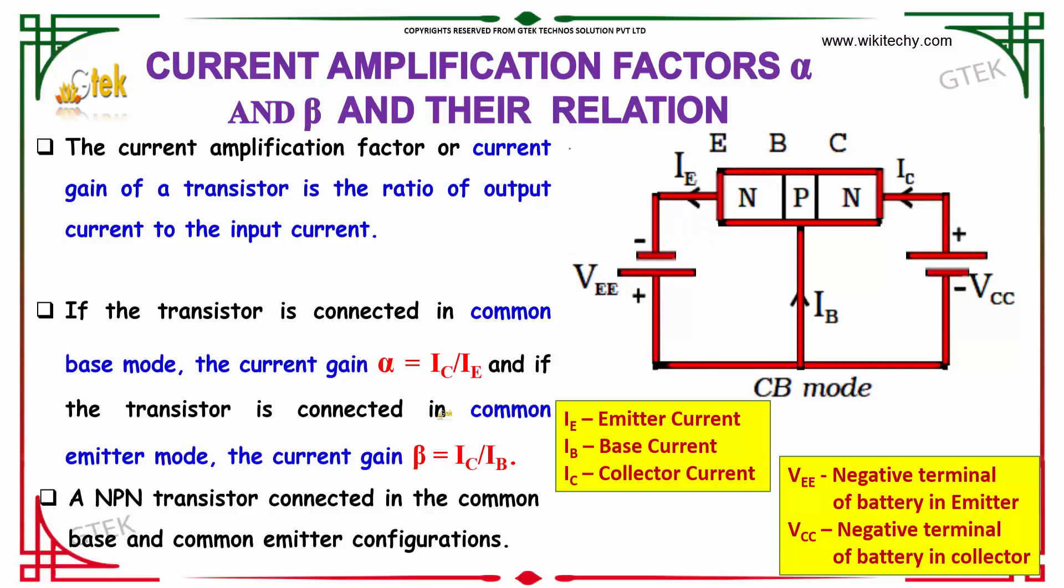And if the transistor is connected in common emitter mode, beta is equal to i-collector divided by i-base.